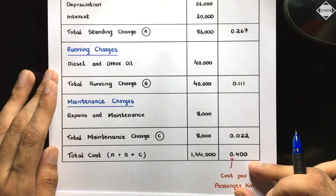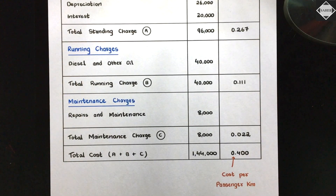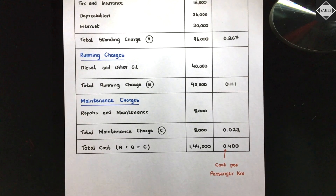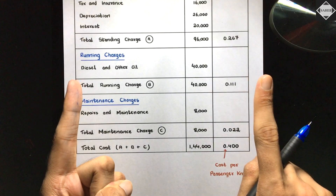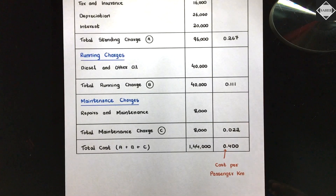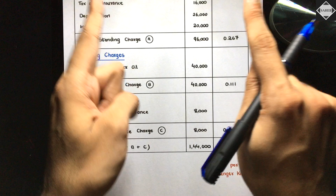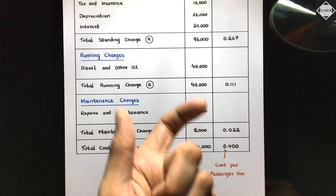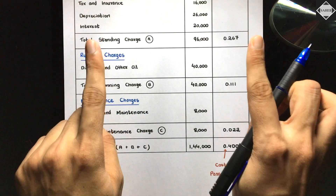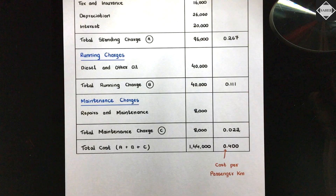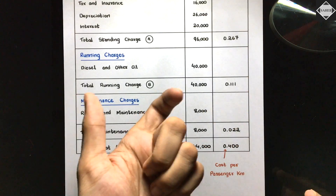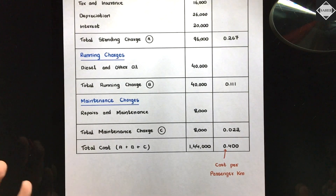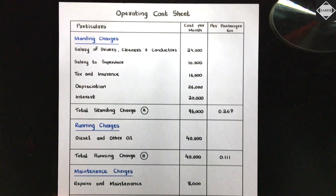Now for the interpretation: cost per passenger kilometer of 0.40 means - if you take one passenger one kilometer on your bus, you incur a cost of 0.40. If you add a profit percentage to this, you get the fare - the ticket price to charge the customer for one kilometer. If a passenger wants to travel 400 kilometers, multiply the per-kilometer fare by 400 to get the full ticket price. Understanding this interpretation is more important than just mechanically calculating the answer.